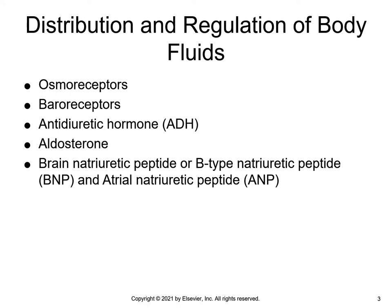Osmoreceptors in the hypothalamus sense the internal environment and promote the intake of fluid, which is the thirst mechanism, when needed. Baroreceptors in the carotid sinus and the aortic arch will detect pressure changes that indicate an increase or a decrease in blood volume and stimulate the sympathetic or the parasympathetic nervous system to return the pressure to normal.